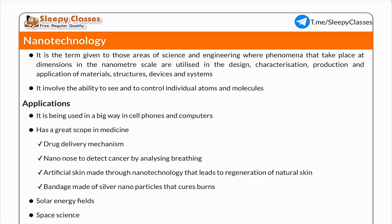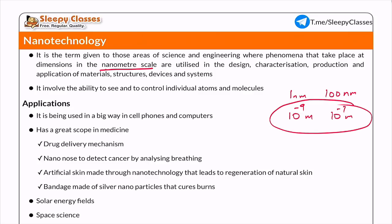So, nanotechnology is a branch of science or engineering which deals with particles belonging to the nanometer scale. The nanometer scale is one nanometer to 100 nanometers, that is around 10 raised to power minus 9 meters to 10 raised to power minus 7 meters. When you deal with particles from this range, we call it nanotechnology — the science of design, characterization, structures, and materials at the nanoscale.